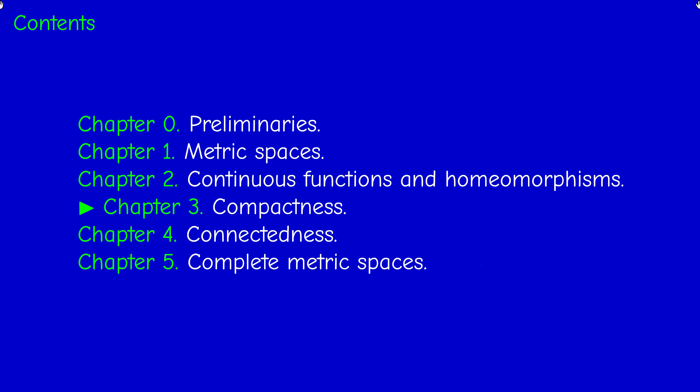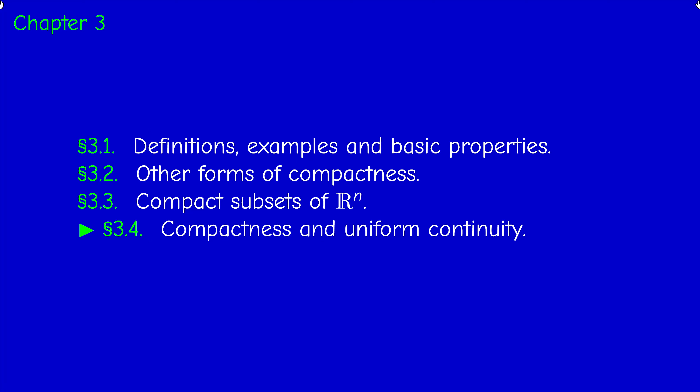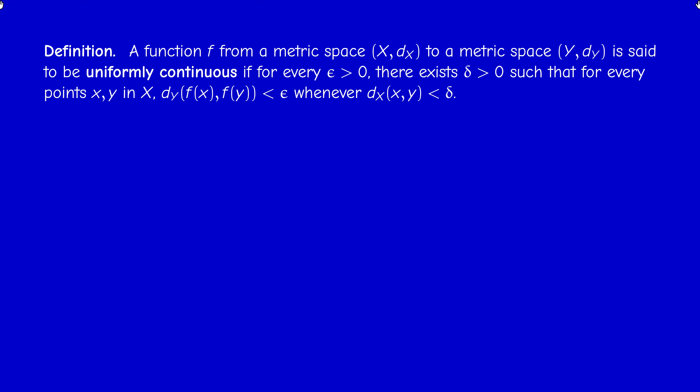Welcome back. In this video, we shall finish chapter 3 by moving to section 3.4 about compactness and uniform continuity. We started studying uniform continuity in M1106 for functions between R and R, but we can generalize this condition to maps between metric spaces.